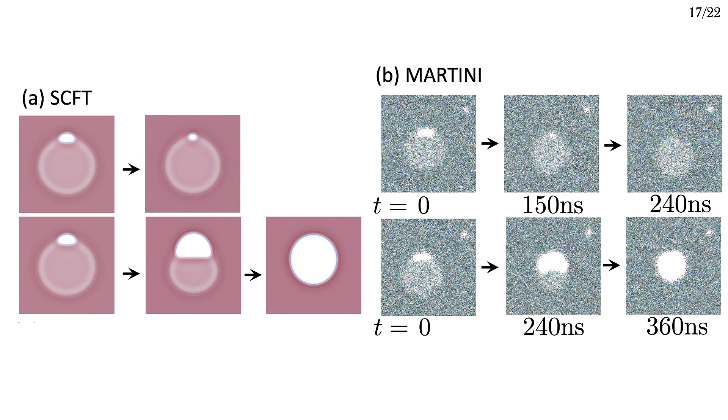Note that the SCFT calculations with the shrinking pore converge on a pre-pore. The fluctuations in the MD simulations allow it to get over the small barrier and close this pre-pore.